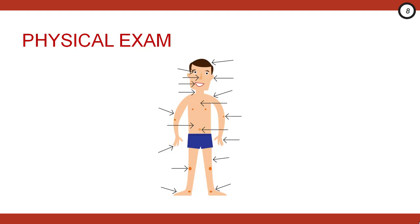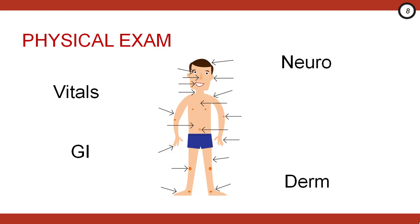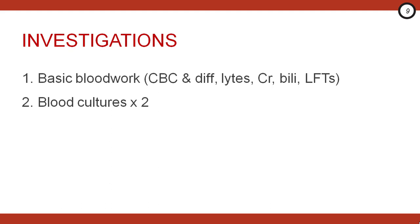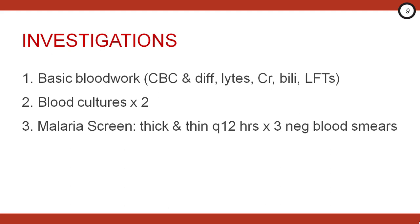Next, do a head-to-toe physical. Some key things to consider: their vitals, their mental status. Look closely for skin lesions or findings such as hepatosplenomegaly or lymphadenopathy. When investigating these patients, the emphasis is going to be generally on blood work, including CBC, lytes, creatinine, bili, LFTs, and blood cultures. If the patient has just returned from a malaria endemic region, you need three negative thick and thin smears completed every 12 hours to rule out malaria. If dengue or typhoid is on your differential, consider serology.